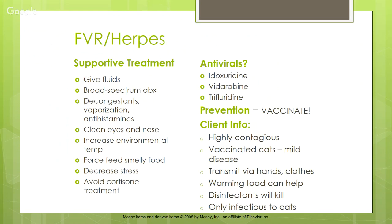Additional supportive measures include humidified air, antihistamines to decrease secretions, cleaning eyes and nose, increasing environmental temperature, and warming or offering smelly canned food — if cats can't smell they won't eat. Decrease stress and avoid any cortisone in eye drops or systemically. Prevention: vaccination is a core vaccine. Even vaccinated cats can get a mild disease. The virus can be transmitted on hands and clothes. Disinfectants kill herpes virus, which is only infectious to cats.